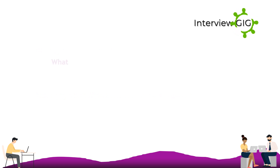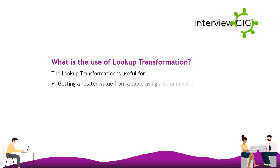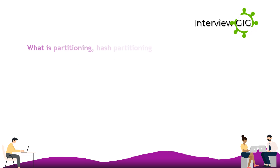The lookup transformation is useful for getting a related value from a table using a column value, for updating a slowly changing dimension table, and for verifying whether records already exist in the table.